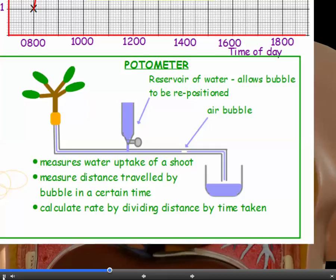And what you measure is the distance travelled by the bubble in a certain time. And you can calculate the rate by dividing the distance by the time taken. Now some potometers look like this and they have a reservoir of water. So when you open that little tap, it pushes the bubble back out again so you can reposition it. Some photometers will simply be a straight up and down capillary tube with nothing so fancy as a reservoir of water.